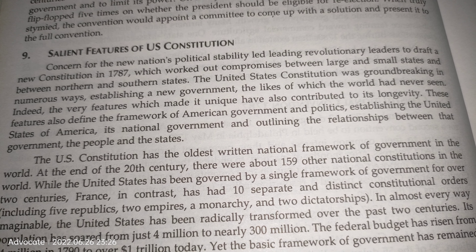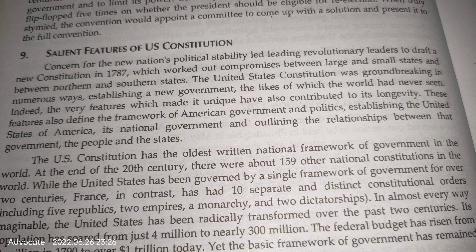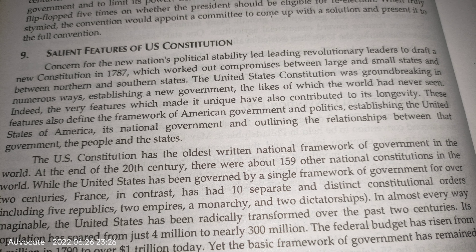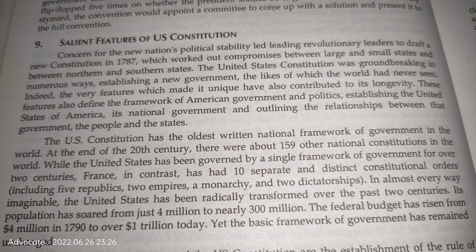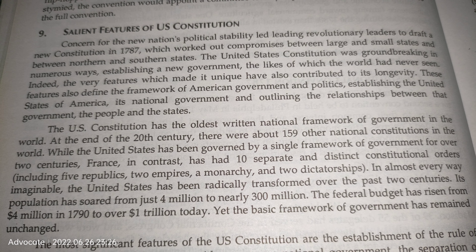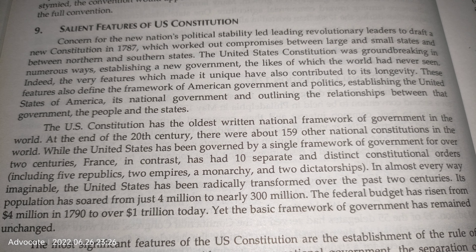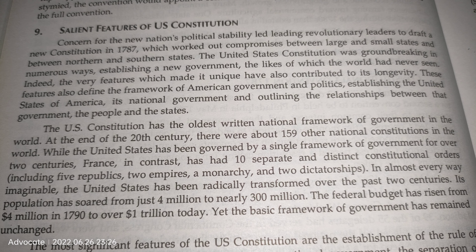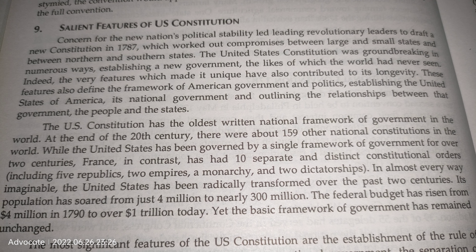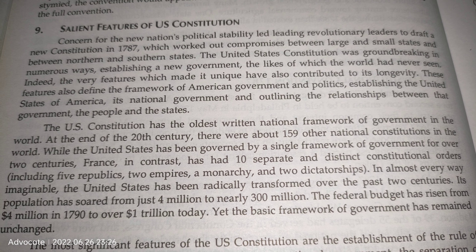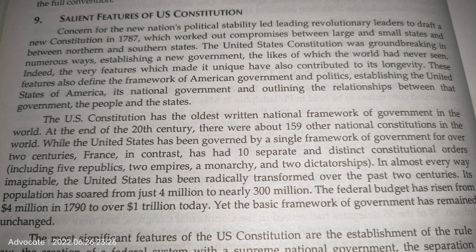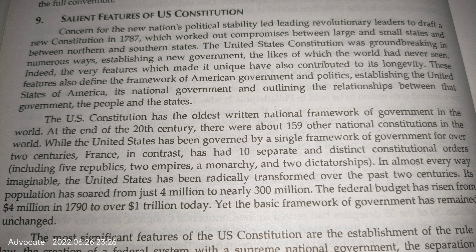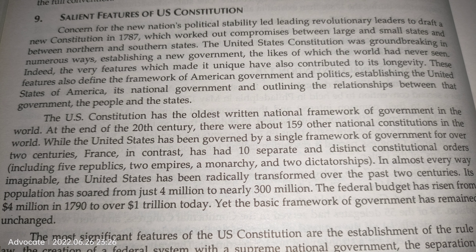The U.S. Constitution has the oldest written national framework of government in the world — the oldest written constitution is of the American states. At the end of the 20th century, there were about 159 other national constitutions in the world. France, in contrast, has had 10 separate and distinct constitutional orders, including five republics, two empires, a monarchy, and two dictatorships.